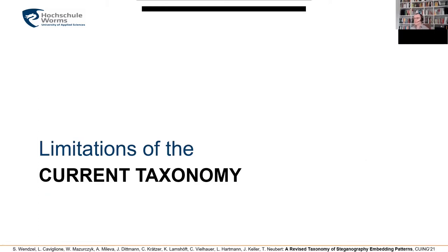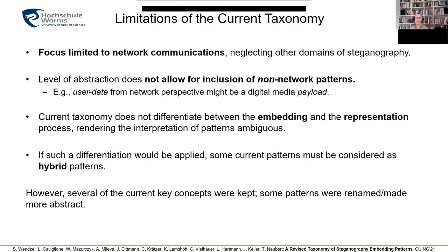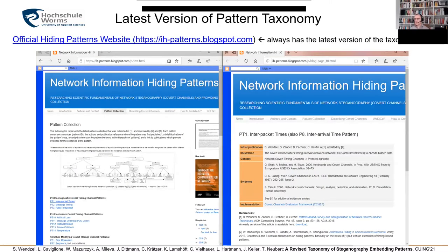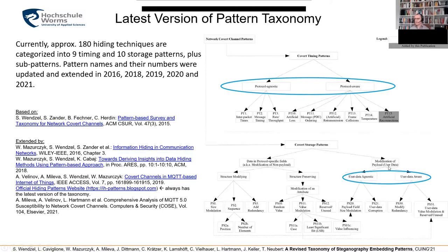However, the current taxonomy has some limitations. First, it has a focus limited to network communications, so we neglect other domains of steganography like text or digital media steganography — and of course we want to include this. This is one of the major contributions of the new work. The level of abstraction does not easily allow for inclusion of non-network patterns because, for instance, in this taxonomy we speak of payload, and while digital media steganography would entirely end up in the payload domain from the network steganography perspective, we also want to apply timing considerations for digital media steganography.